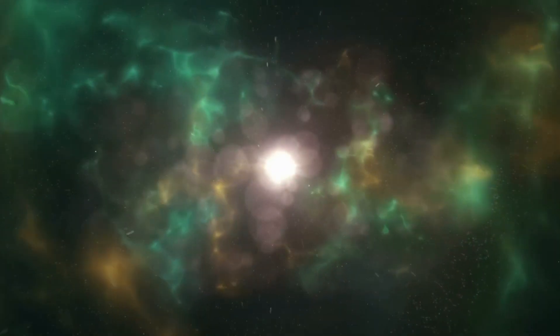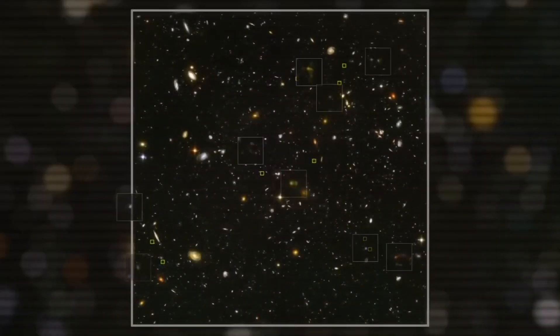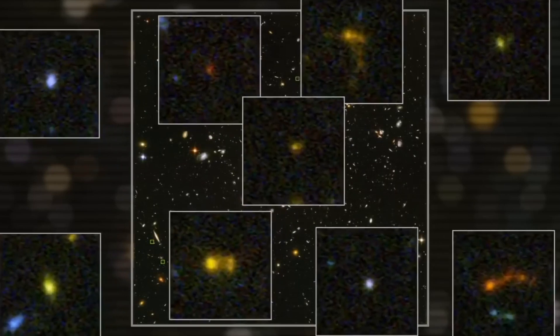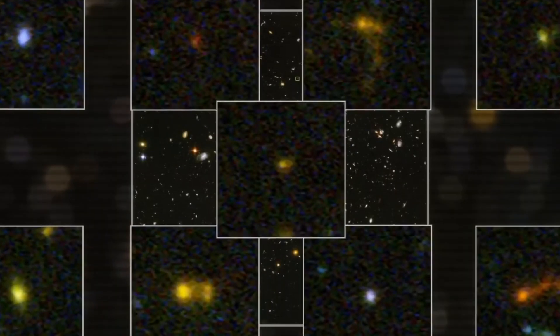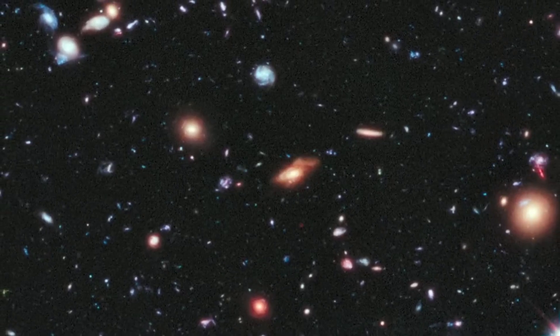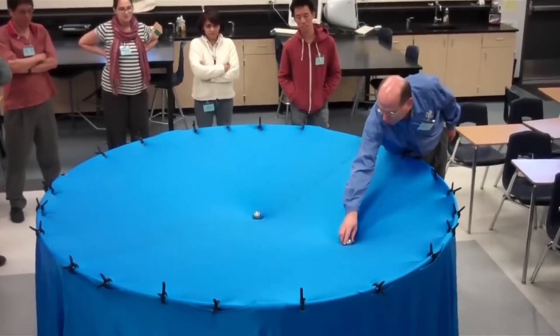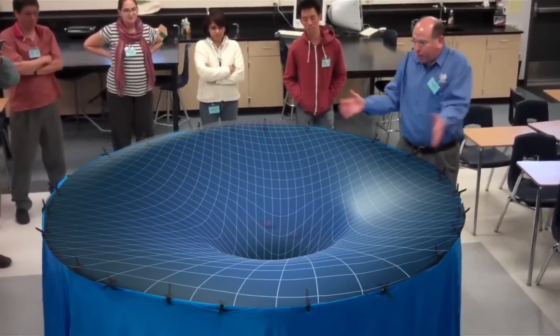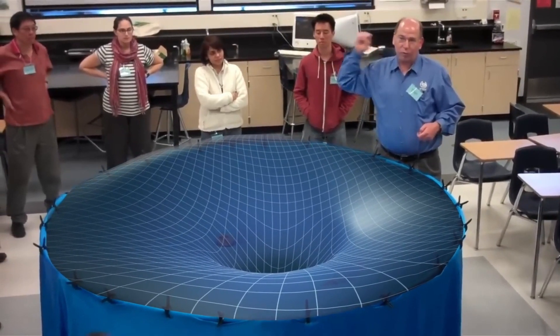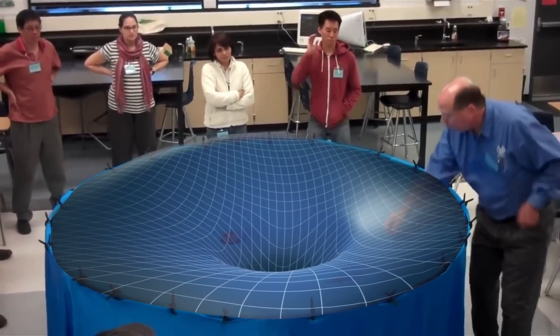Physicists consider time as a fundamental concept or dimension. It helps us understand how things change and move in the universe. Space and time are intertwined to form a four-dimensional structure, known as space-time. Objects like stars and galaxies leave their marks on this structure.